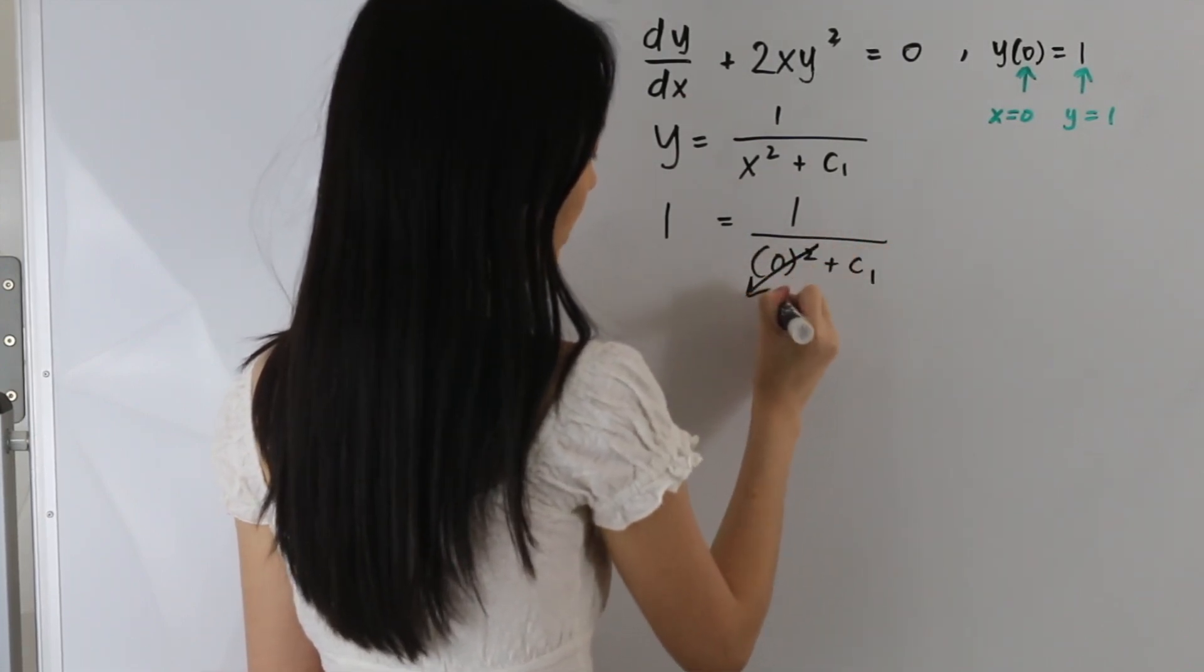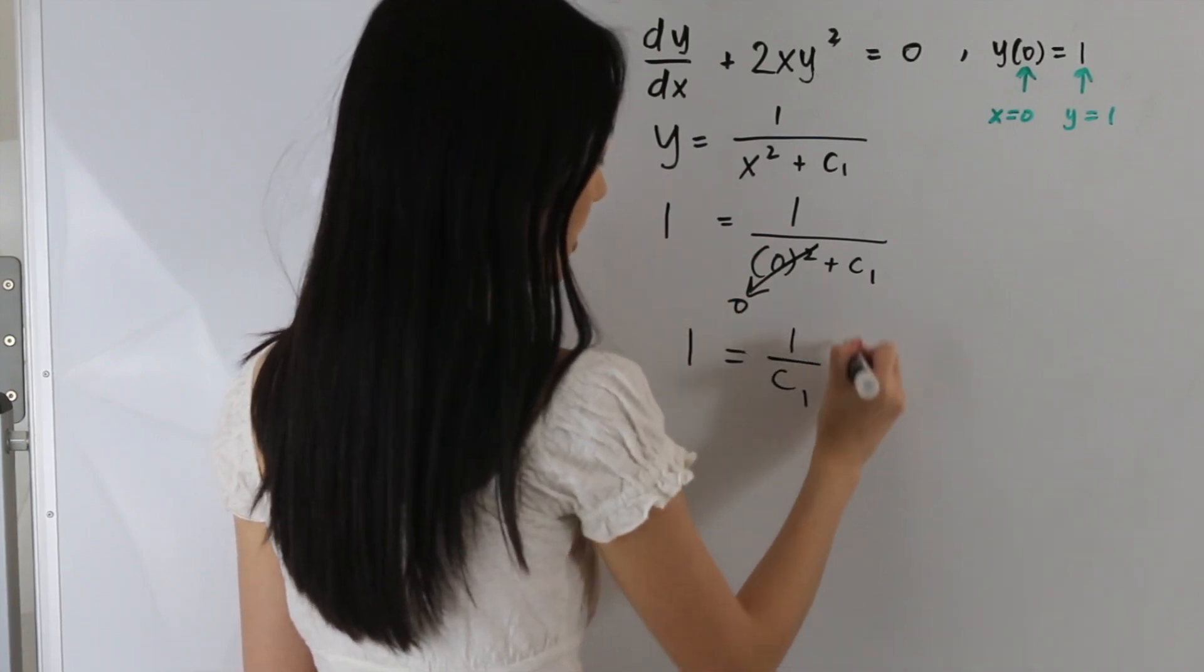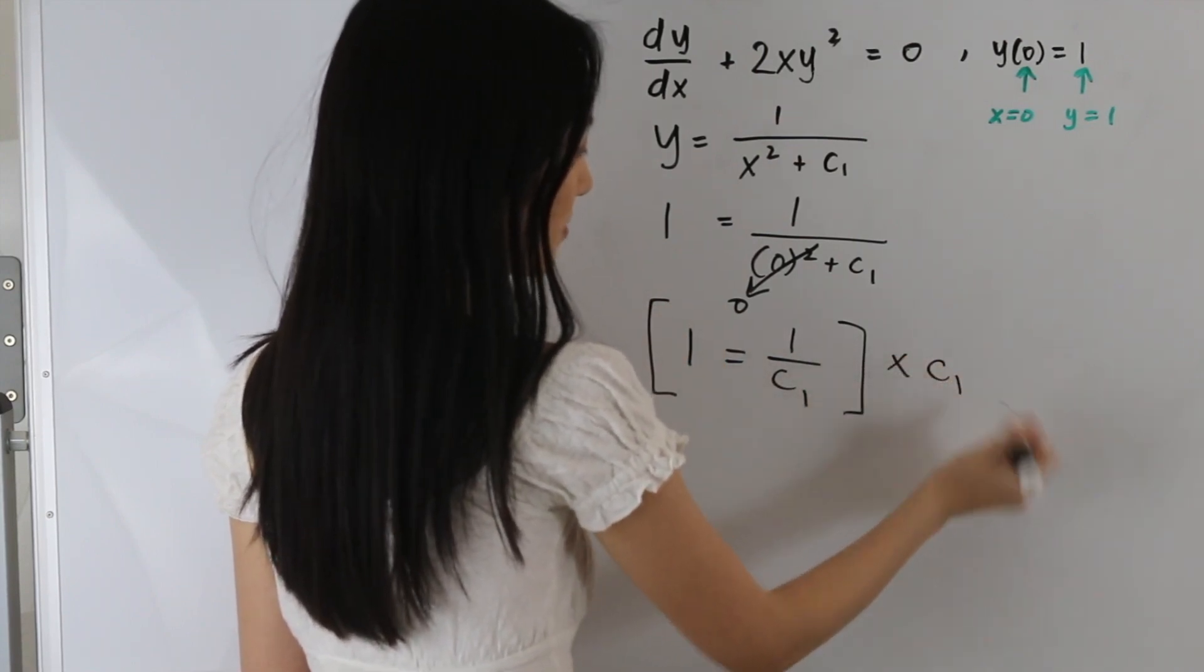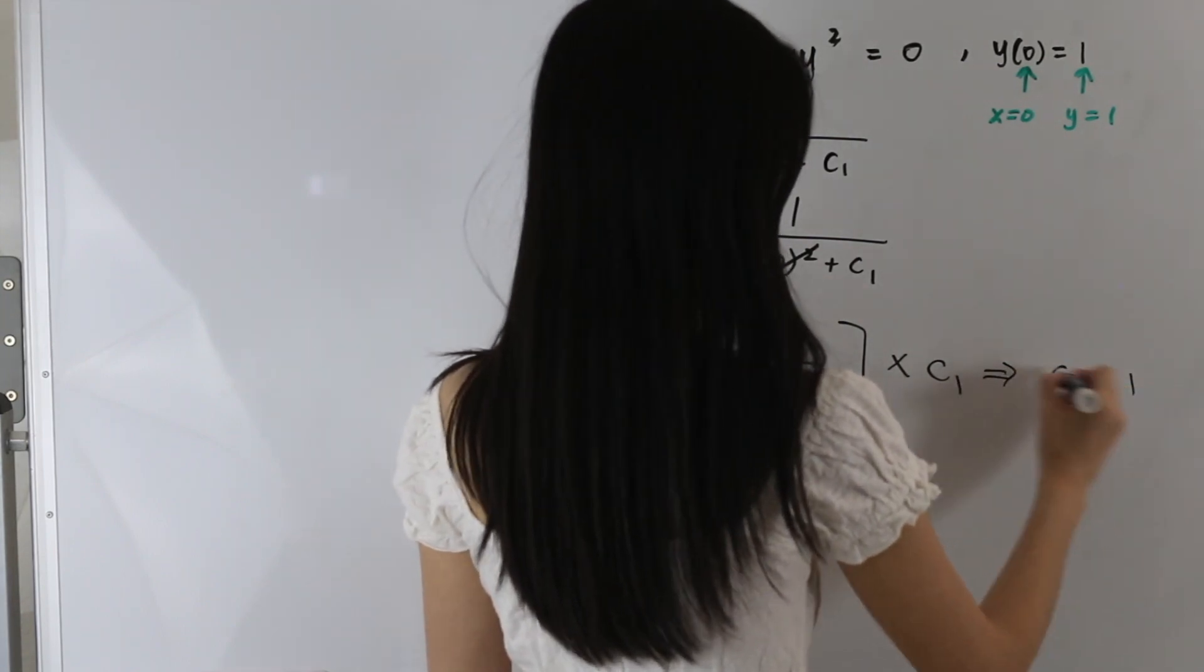And then this is just 0, so we are left with 1 equals 1 over c1. And let's go ahead and multiply both sides by c1, and we get that c1 is equal to 1.